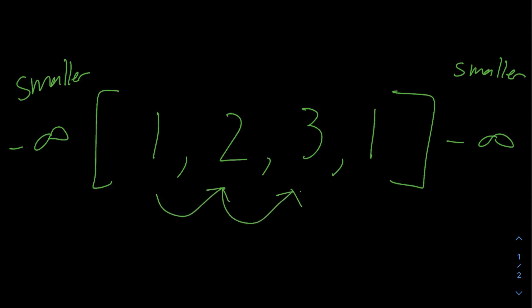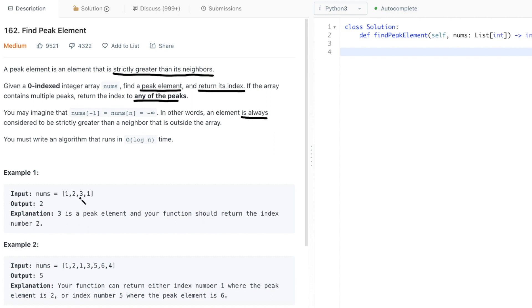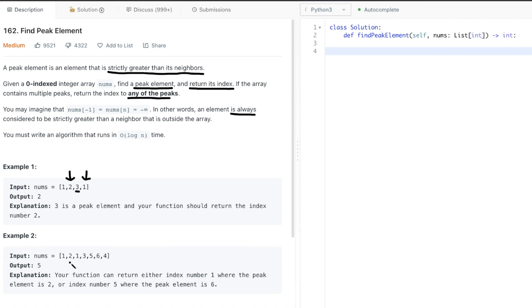So let's try to work out a few examples. For number one, it's pretty obvious there's a peak at three, index two, since three is greater than its neighbors two and one. For example two, you can either return index one because of two or index five because of six.